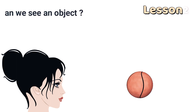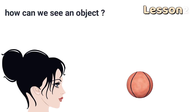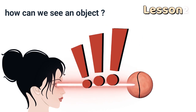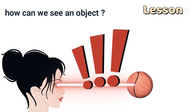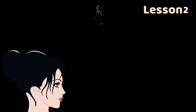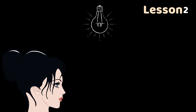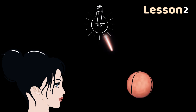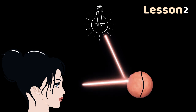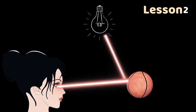How can we see an object? Some people think that they emit light rays from the eyes — but this is not true. In order to see a ball, first there must be a source of light that emits light rays, then light rays fall on the ball, and then light bounces off the ball into the eyes.